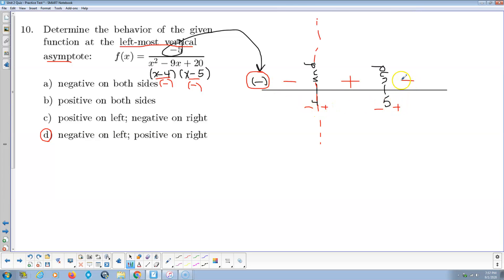And then we're to the right of 5. We have a negative times a positive times a positive. That's a negative. So there's a sign analysis. So at the leftmost vertical asymptote, we're negative on the left, positive on the right. Answer D.